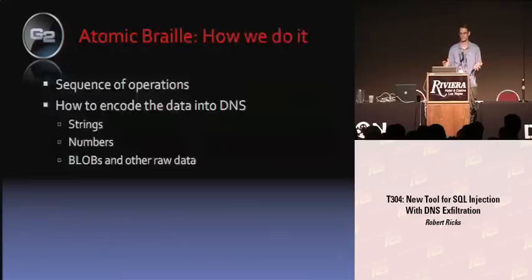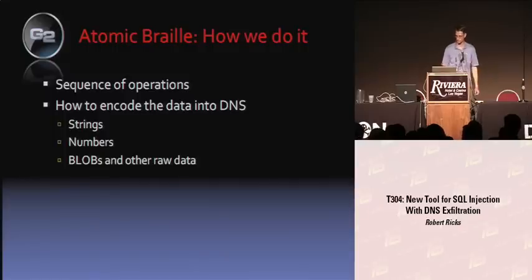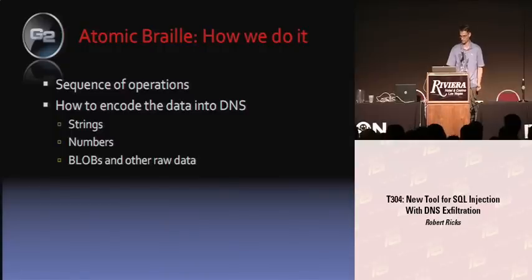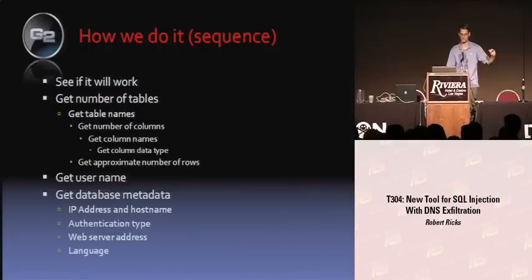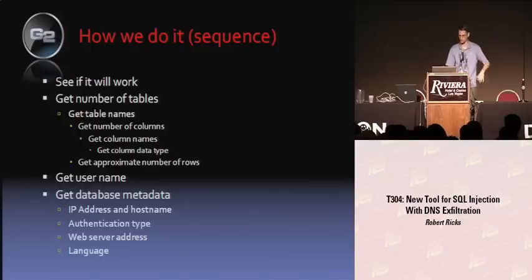So how do we do it? I'm going to tell you what sequence my code goes through and how we encode it, so you can build your own or see what I did. The sequence is: first we check if it works — I put a tag in there that says if I get this back in DNS, I know it's working.